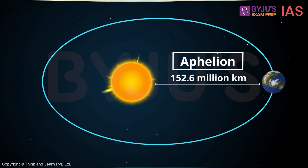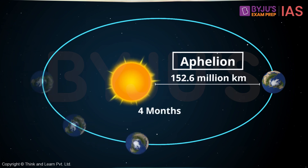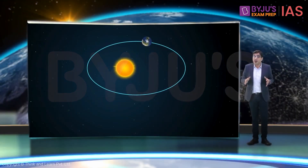So the Earth takes about six months to go from its nearest point to its farthest point from the Sun. Can you imagine how fast the Earth moves around the Sun?